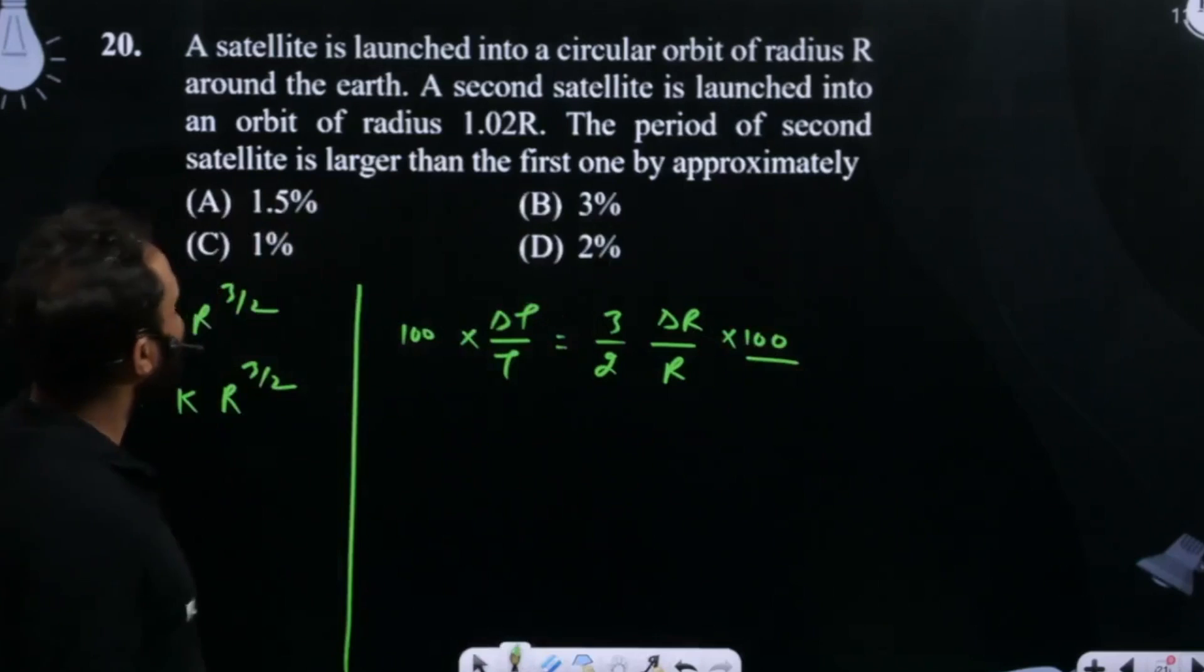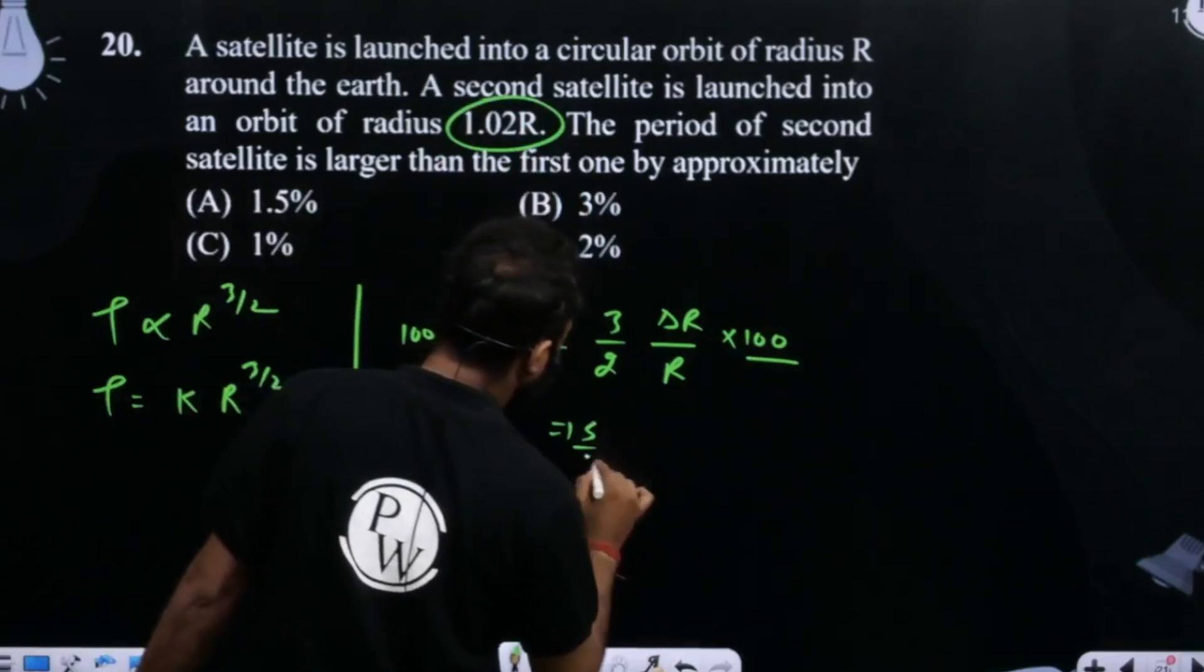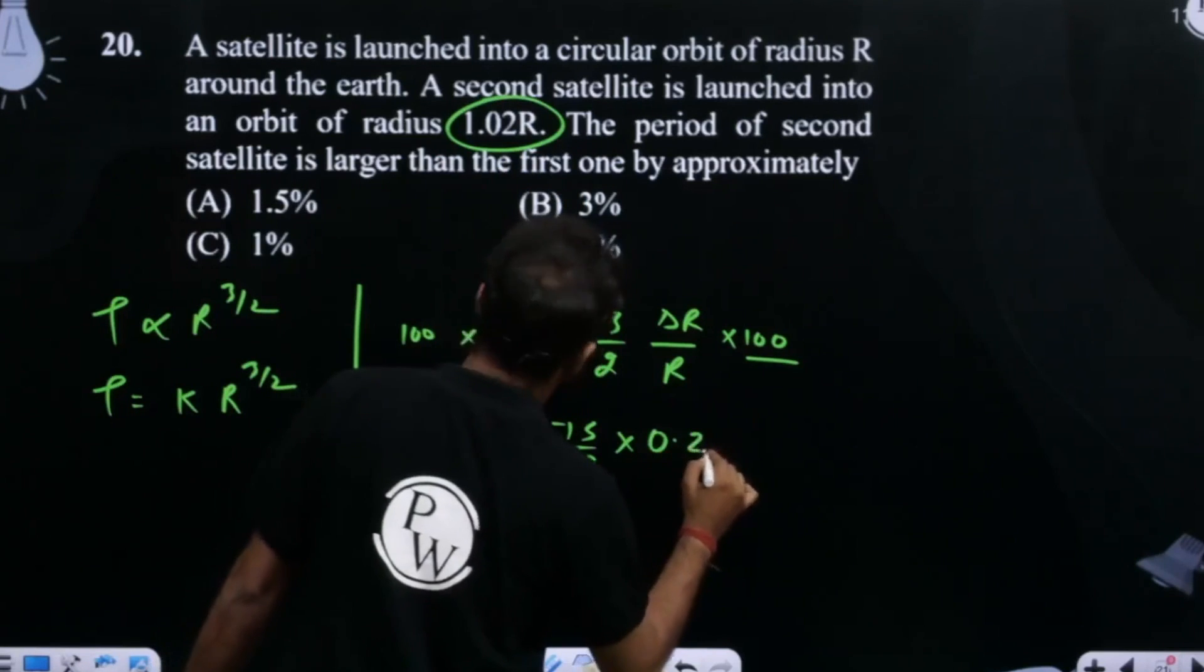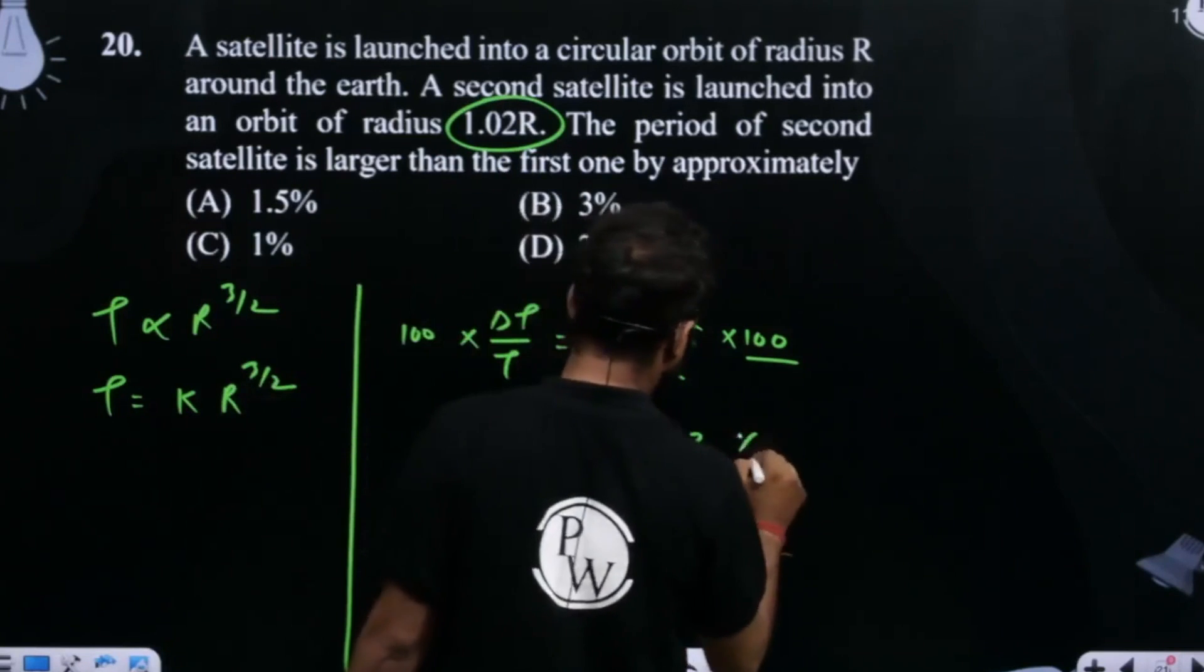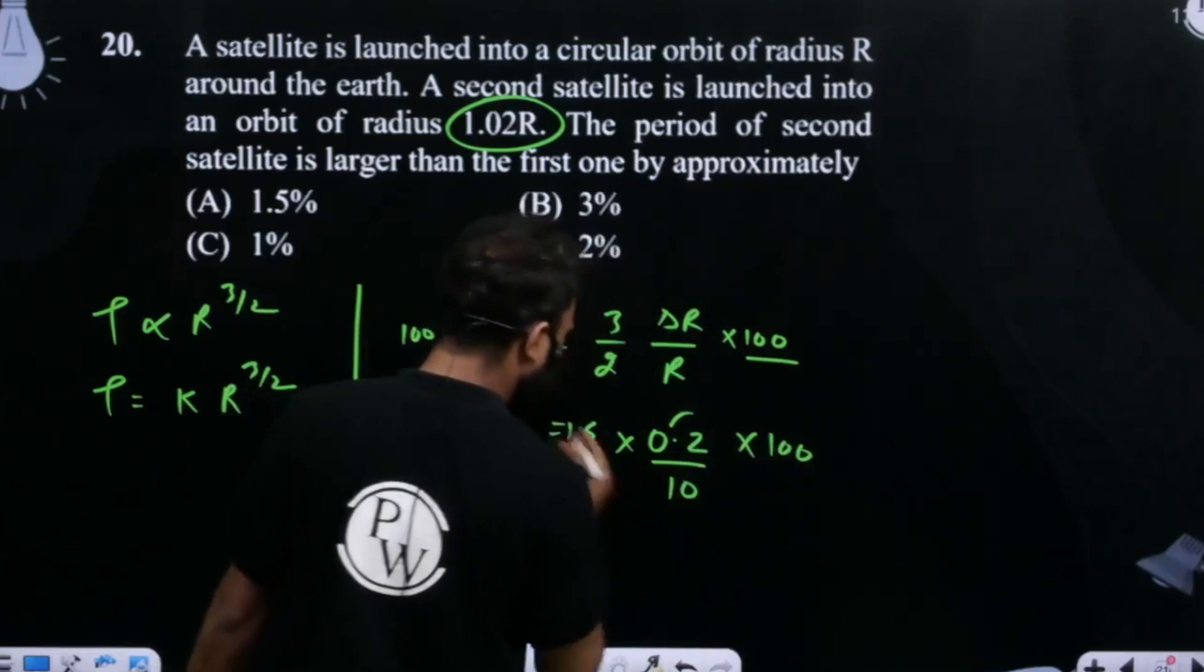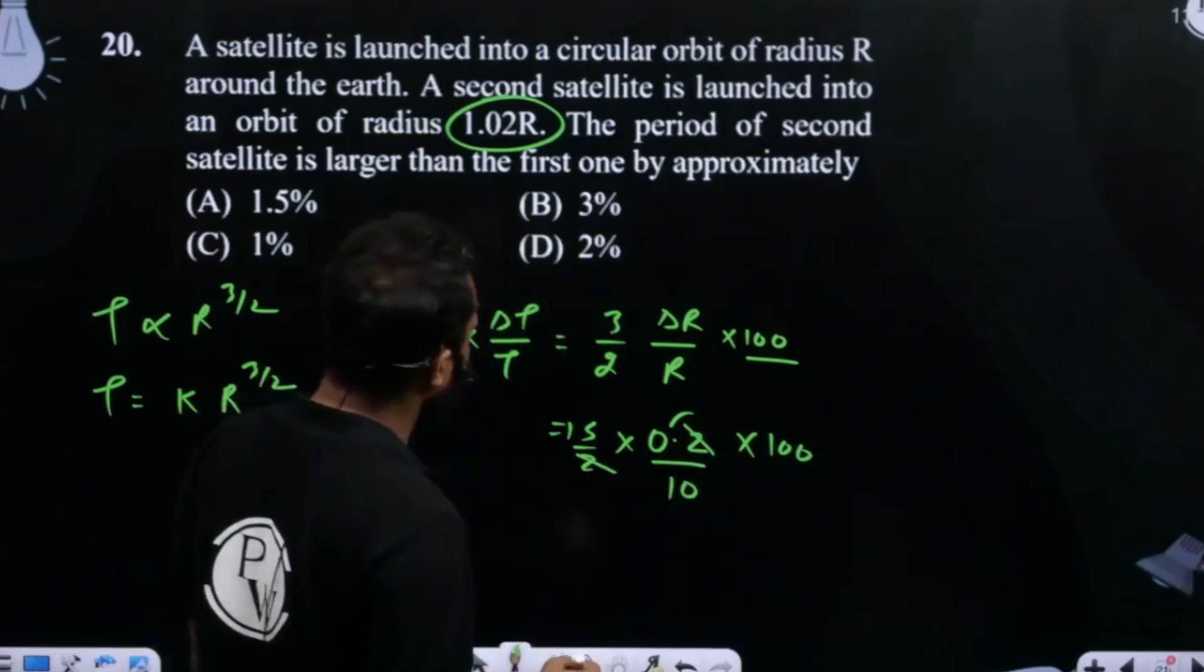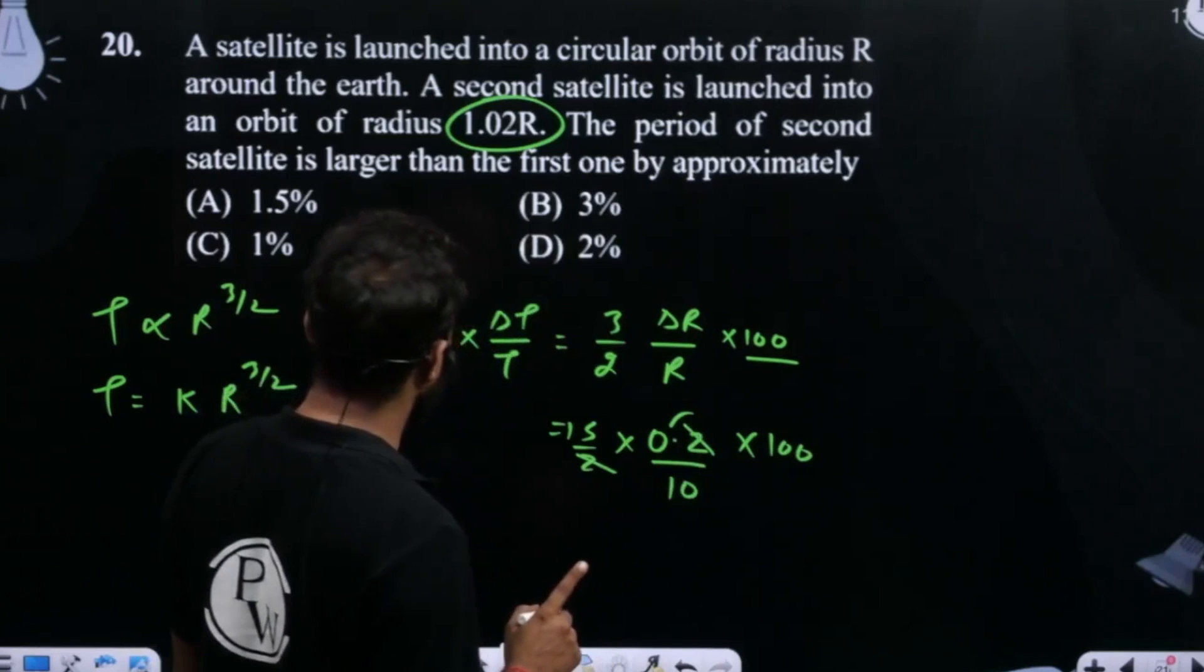Now, the change in radius gives us (3/2) × 0.2 × 100. So this will come down here, 2 and 2 will cancel out... wait a second, I made a mistake here.